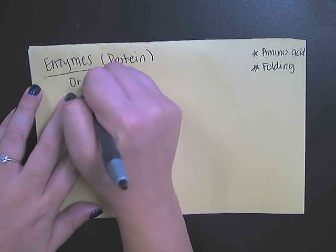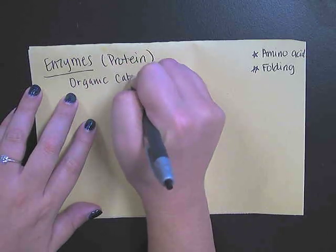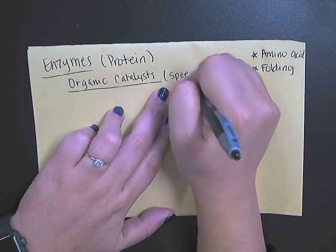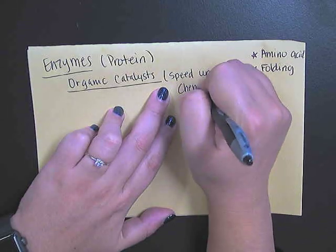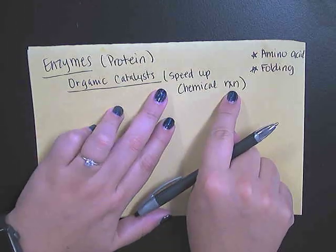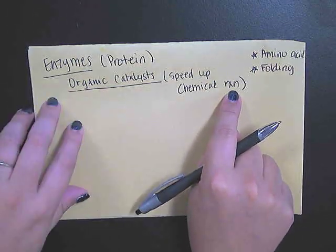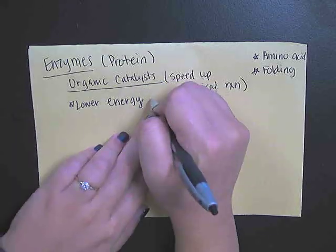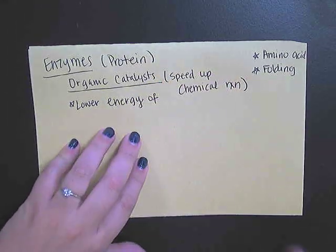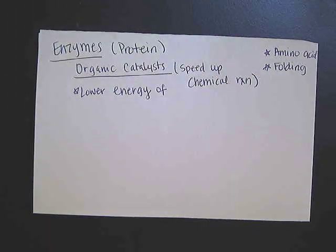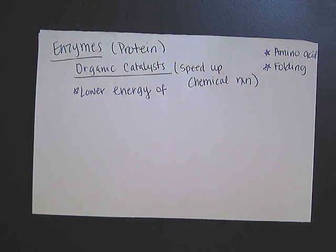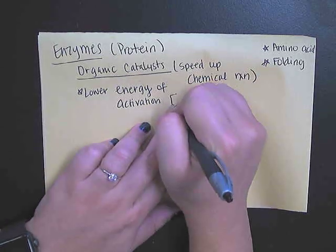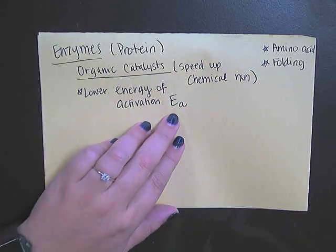Enzymes are organic catalysts. You may recall from your chemistry days that a catalyst will speed up chemical reactions — I'll just abbreviate reaction as RXN. The way that they do that is by lowering the energy of activation. That energy of activation is the amount of energy required to overcome the starting hill of a reaction. I'll write it as E sub A.